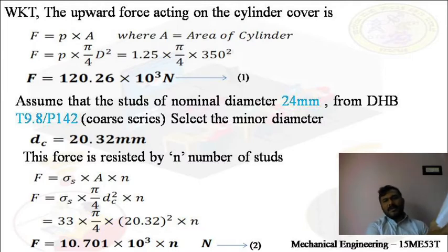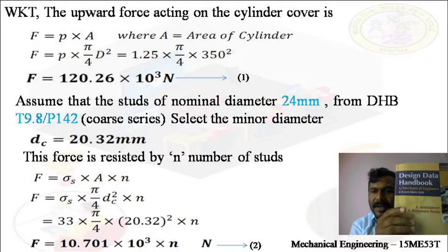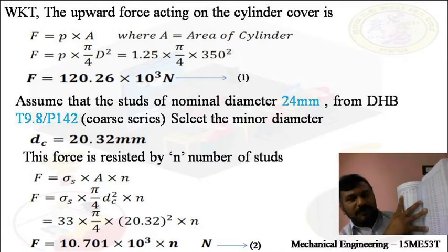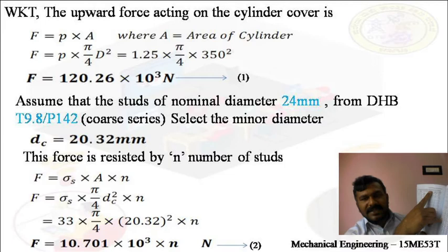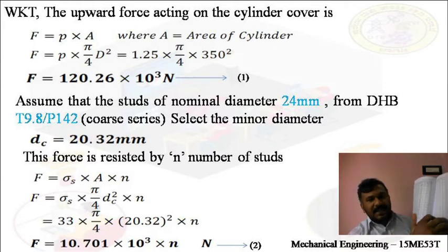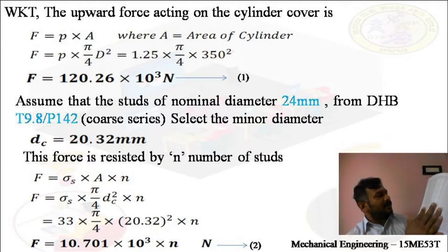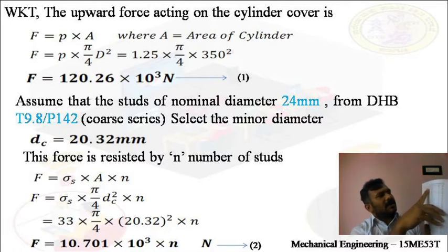It is very difficult to see this book clearly. This is the design data handbook for mechanical engineers, written by K. Mahadevan and Balaveera Reddy. If you open page number 140, you will get table 9.8 — basic dimensions for design profiles of ISO metric screw threads. In column 1, you will see the major diameter or nominal diameter. Corresponding to 24 mm, we select the core diameter available in the 5th column. That is DC = 20.319, which we consider as 20.32 mm.